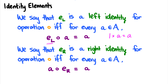We say that it is a right identity if it holds for the right side of the operation. Multiplication is special because these identity elements work for both sides — we have A times one is equal to A as well.